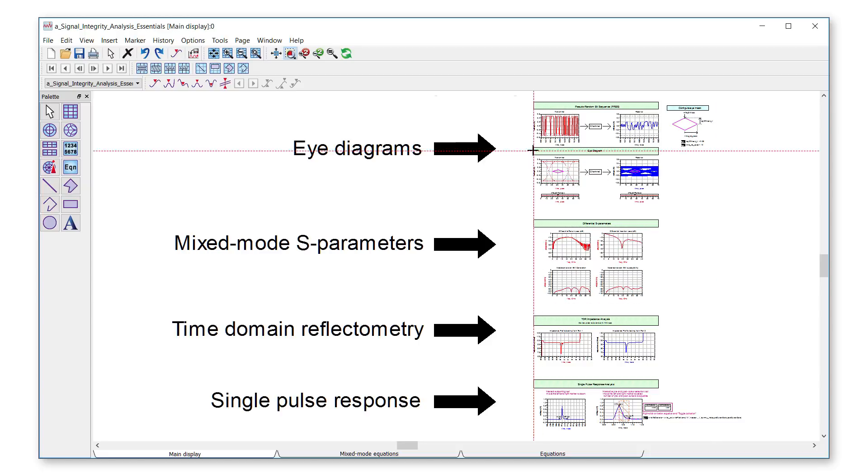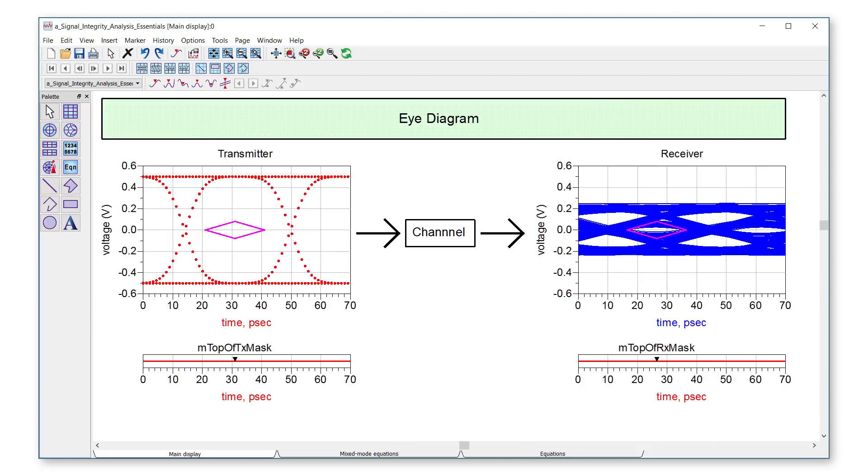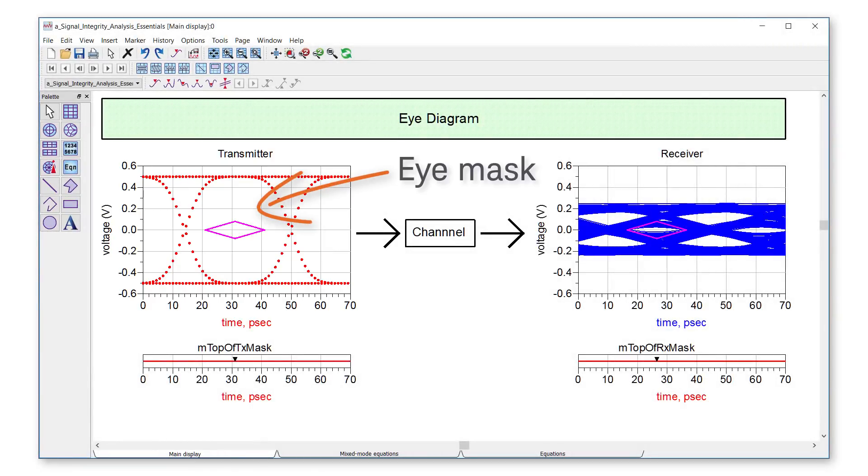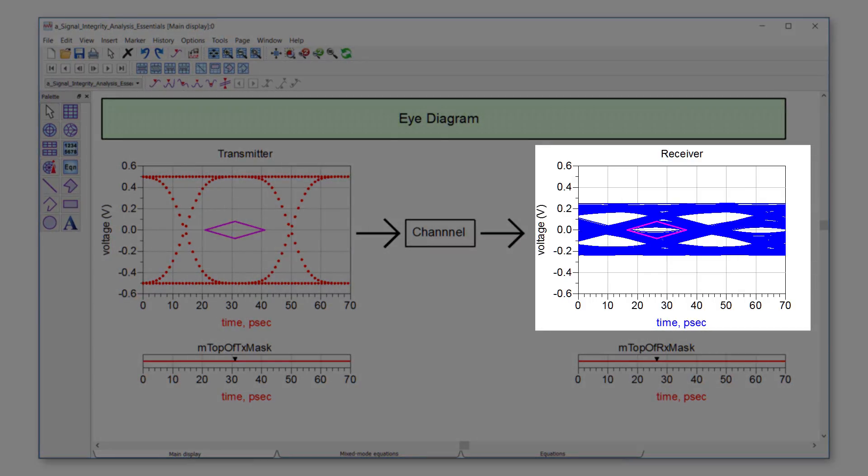From the eye diagram analysis, we can see the transmitted signal, shown in red, is only outside of the eye mask, and a digital one or zero can be clearly distinguished. However, when a signal reaches the receiver, there is an eye mask violation, and we have a signal integrity problem.